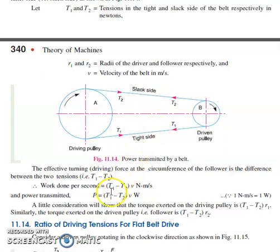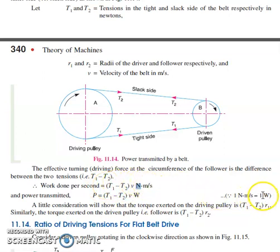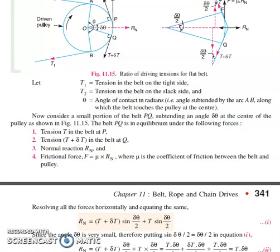T1 is higher because of the effective contact on the tight side; t2 is lower because the slack side is loose. Velocity is in m/s and tension is in Newtons, so (t1 − t2) × v gives Newton-meters per second, i.e., Watts, since 1 N·m/s = 1 W. Therefore, power P = (t1 − t2) × velocity, with the unit being Watts.